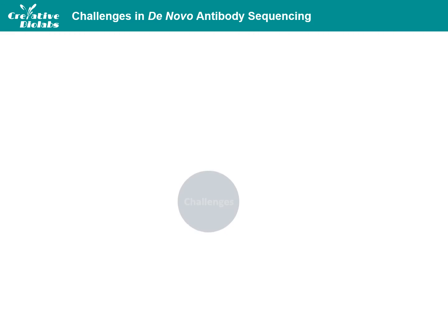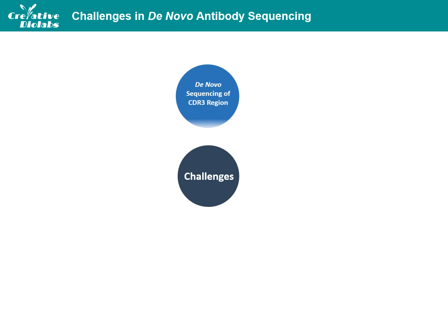Despite the broad range of applications, DeNovo Antibody Sequencing has been facing several notable challenges. The first challenge is the DeNovo sequencing of the CDR3 region. It is difficult to determine antibody variable region sequences without error, especially in CDR3. While the CDR3 of the light chain is mostly encoded by the germline sequences, the CDR3 of the heavy chain is usually not available in databases. It is encoded by the so-called D segments, but these are modified by nucleases and terminal transferases. Typically, only 1–4 amino acids of a D segment remain in the matured antibody. The rest of the D segment is artificial and has to be sequenced de novo.